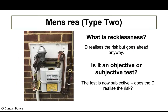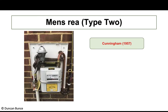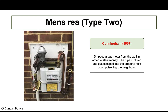The second type of mens rea, common in basic intent offences, is recklessness. Recklessness is where the defendant realises the risk but goes ahead anyway. The test is now subjective — does the defendant realise the risk? A subjective test is about what the defendant themselves believes. An objective test, by contrast, measures conduct against a fictitious reasonable person.